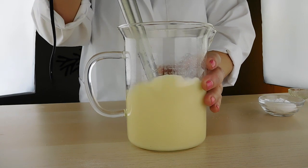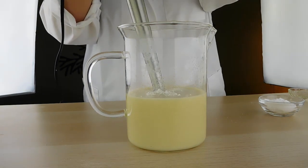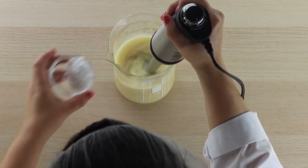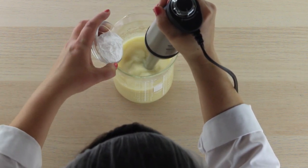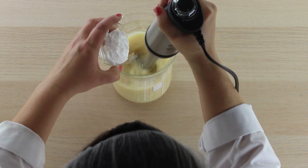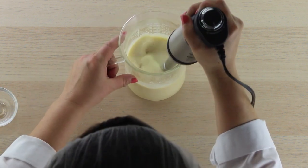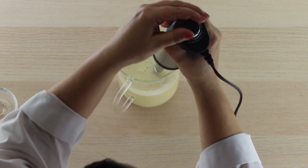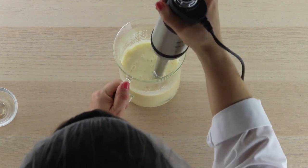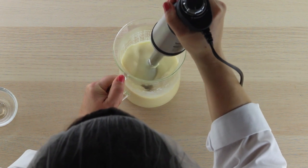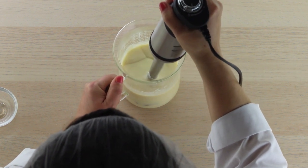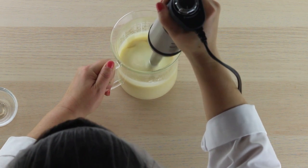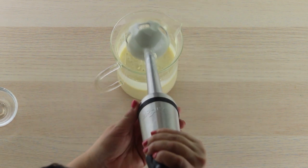Now as this starts to thicken you may need to turn the speed up on your mixer. You just want to make sure you mix it really well so you don't have any un-homogenized parts in there. Okay I think that's pretty good.